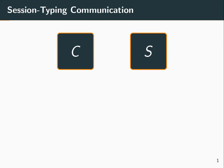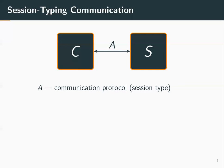To set the stage, let's suppose we have two processes, a client C and a server S, and let's assume that they communicate with each other over a wire or a channel, and let's further assume that communication on this channel respects a communication protocol or a session type A.